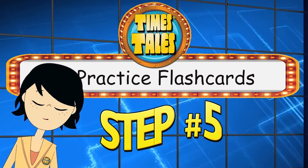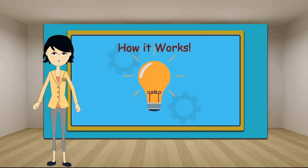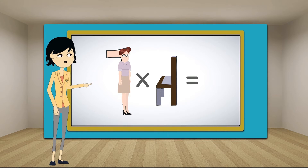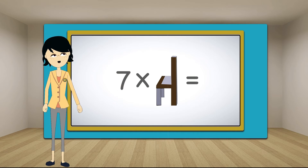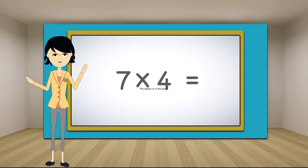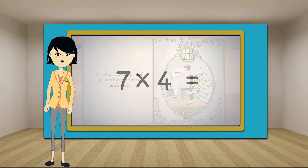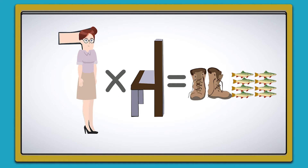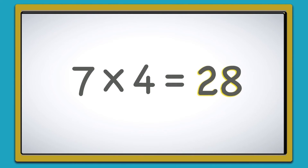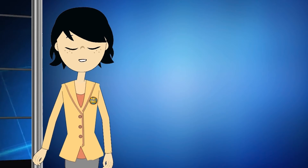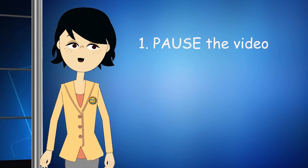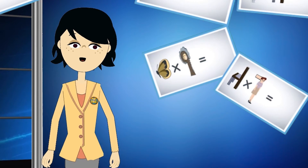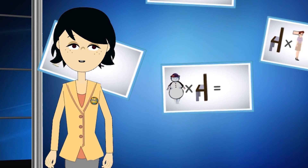Now that you know the stories, it's time to try the flashcards. Did you know there's a multiplication problem hiding in each story you just learned? Let's see how it works with the practice flashcards. This flashcard is for the multiplication problem seven times four. Remember, Mrs. Week represents the number seven and the chair the number four. You may think you don't know the answer, but you do! The answer is hiding in the story. To solve this multiplication problem, all you have to do is remember the Times Tale that had Mrs. Week and the chair. There was only one story with both of those characters: 'Mrs. Week sat on a chair and fished. She caught two boots and eight trout.' Seven times four is twenty-eight.